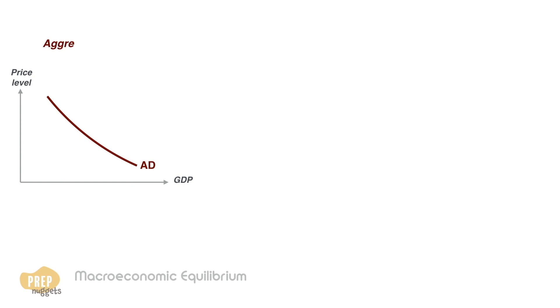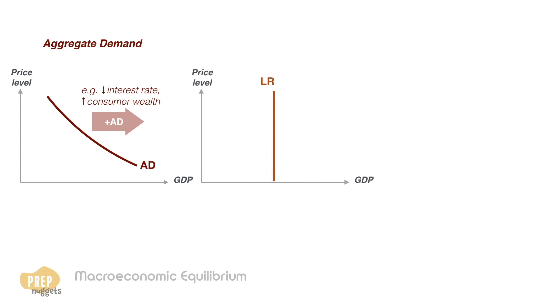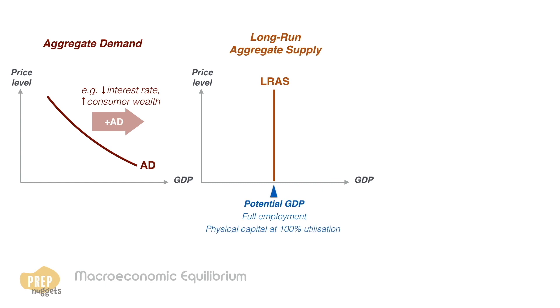From the last two lessons, we've learnt that the aggregate demand curve is downward sloping and that certain factors like an interest rate cut or increase in consumer wealth increases aggregate demand, shifting the curve to the right. We also learnt that the long-run aggregate supply curve of an economy is vertical at the potential level of GDP, in which the economy is at full employment and physical capital are all operating at 100% utilisation.